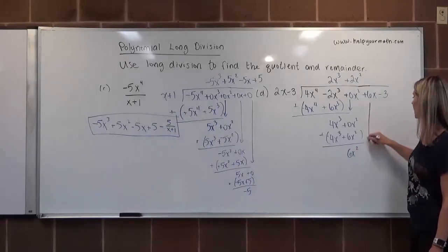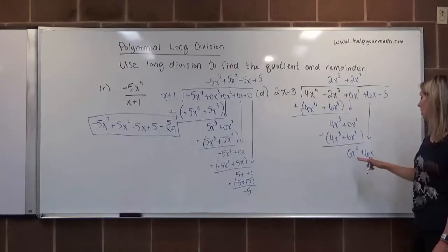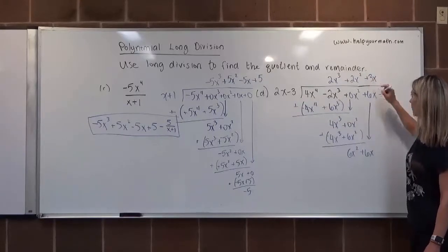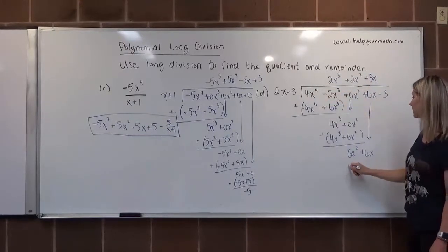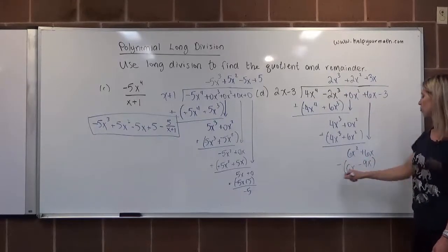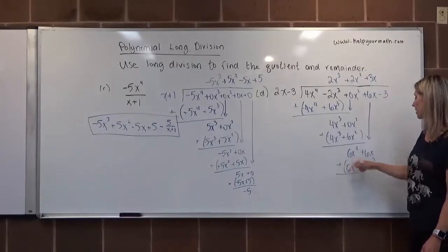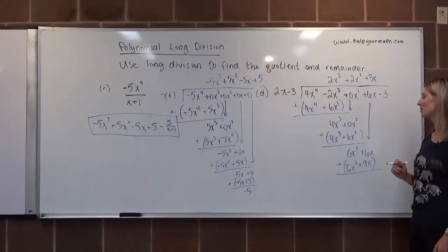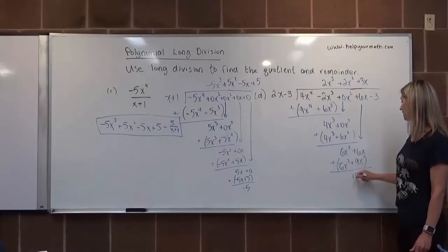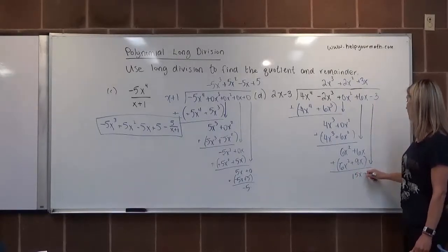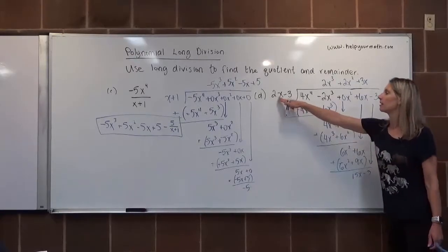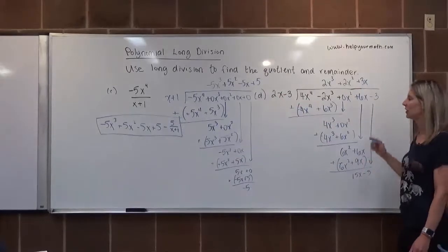We bring down the next term, 6x. Dividing 6x² by 2x gives 3x, so plus 3x. We multiply 3x by (2x-3) to get 6x²-9x. After subtracting with sign changes, 6x² and -6x² cancel. Then 6x+9x gives 15x. We bring down -3 from the dividend. Now 15x divided by 2x gives 15/2.